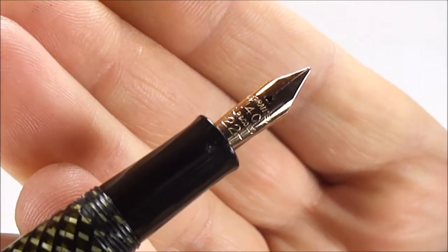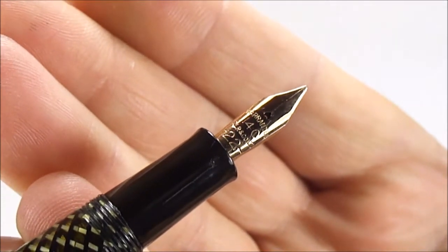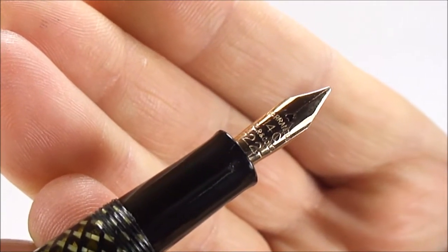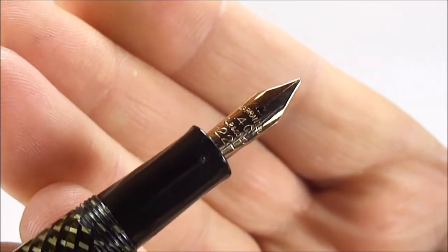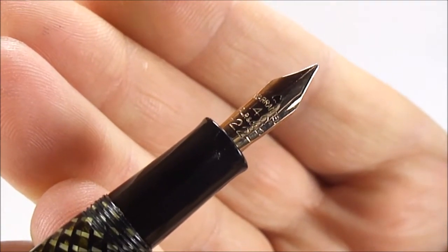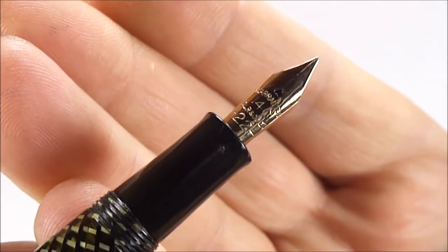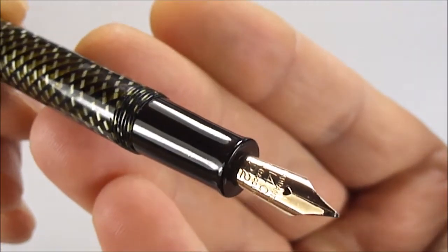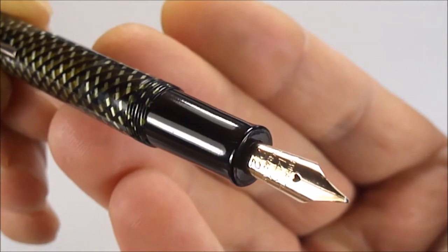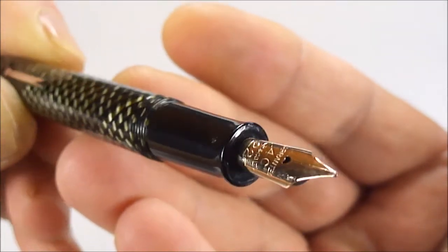If we show you the nib, let's keep it nice and still for you, and I'm hoping you'll see it says warranted 14 carat TDLR, which stands for Thomas De La Rue and Company Limited, and then the correct number to the very end there, 22. So it's the correct number 22 nib.